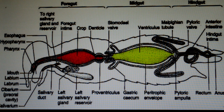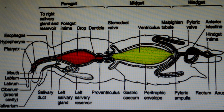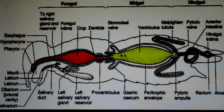At the junction of midgut and hindgut, there is a valve called the pyloric valve, which regulates food flow. Looking at the hindgut, there are long finger-like structures called Malpighian tubules. These Malpighian tubules regulate salt, water, and nitrogenous waste excretion.